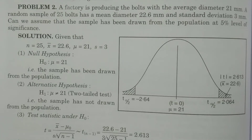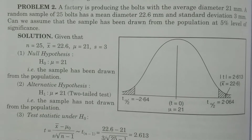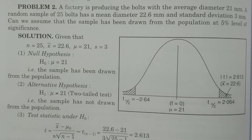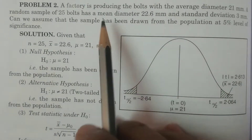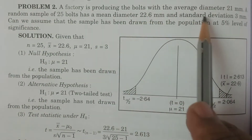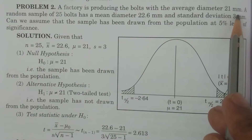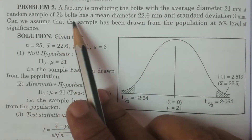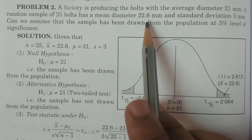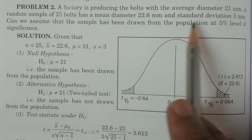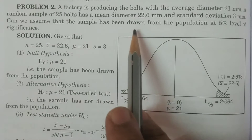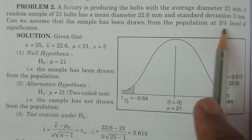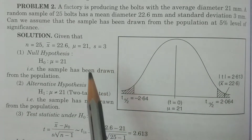Welcome to BSc Statistics students. In this class I explain one more problem in the T-test for single mean. A factory is producing bolts with average diameter 21 mm. A random sample of 25 bolts has a mean diameter 22.6 mm and standard deviation 3 mm. Can we assume that the sample has been drawn from the population at 5% level of significance?